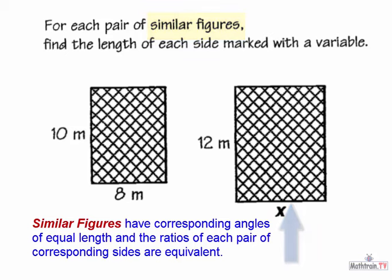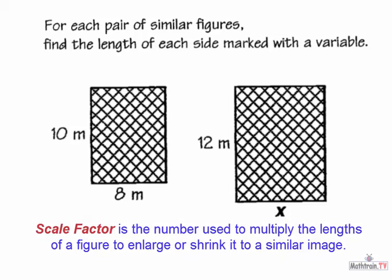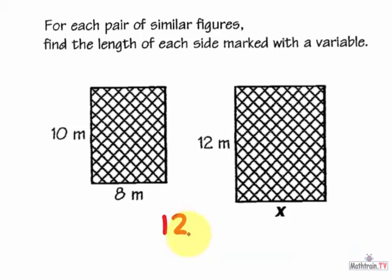The scale factor is the number that we use to multiply the sides to make a copy larger or smaller or the same size. Okay, so let's find the scale factor. Let's set up a ratio. I'll take 12 meters from this side and put it over its corresponding side, which is 10 meters.